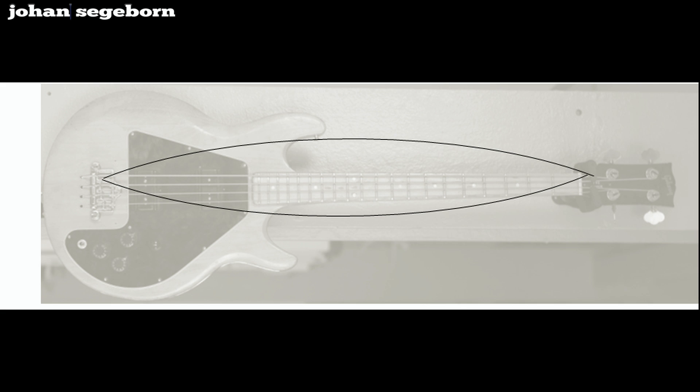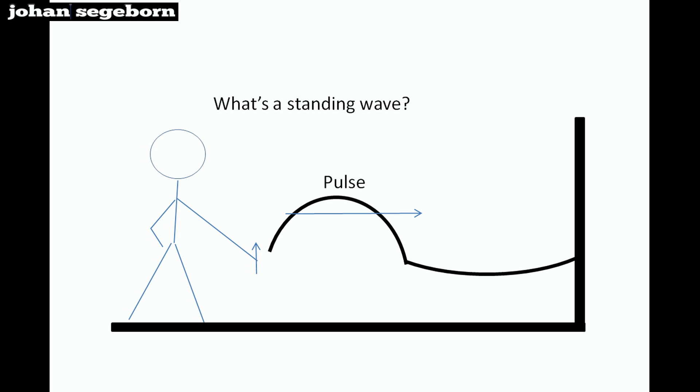So let's first check out what is a standing wave. Let's assume that you have a string that you've attached to the wall and you jerk your hand and then there's a pulse moving along the string, bouncing against the wall back towards you.